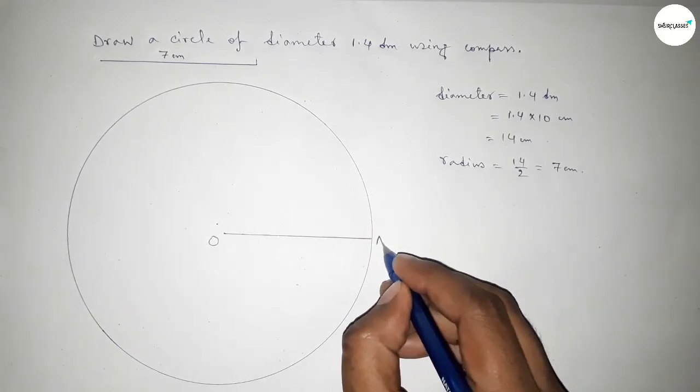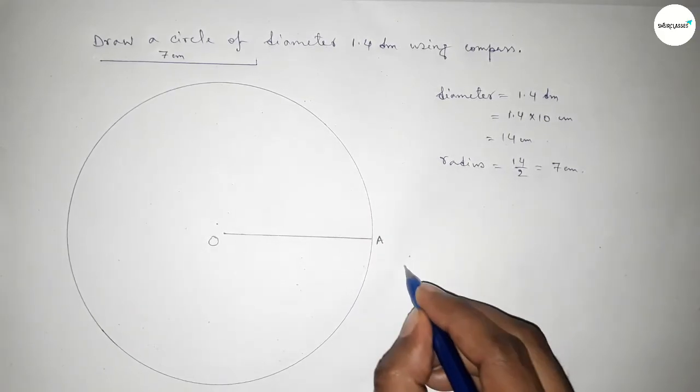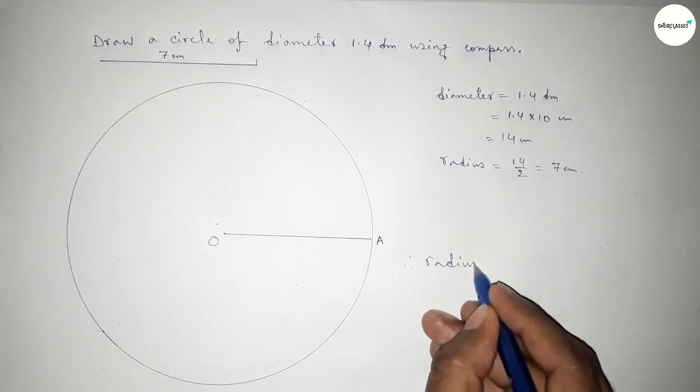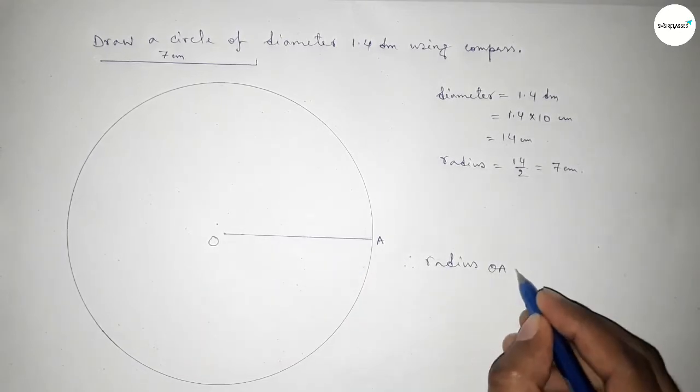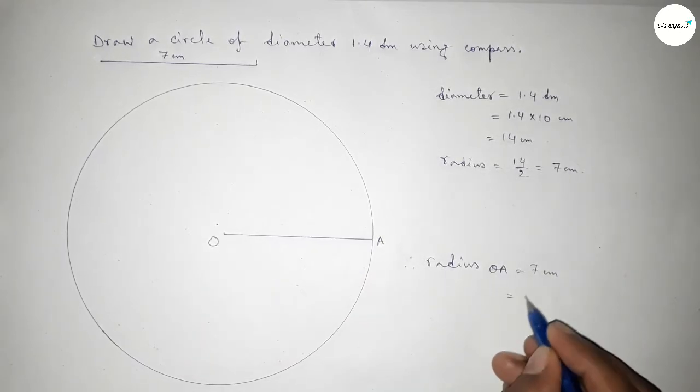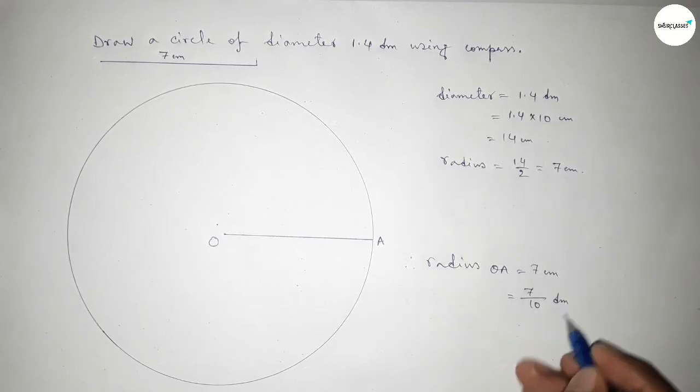So taking here point A, so therefore radius OA equal to 7 centimeter. Now converting into decimeter, so dividing by 10, so this is 0.7 decimeter.